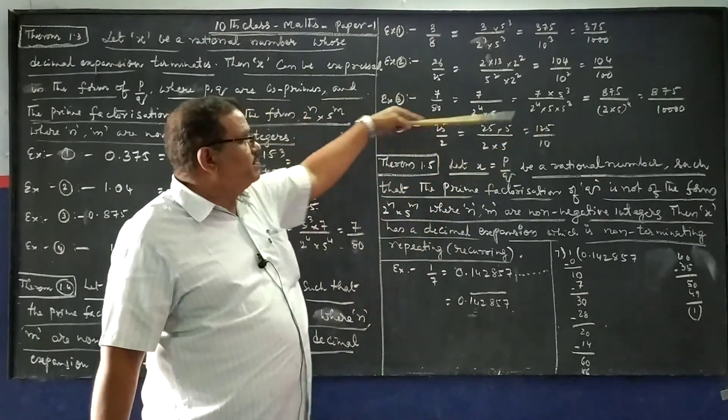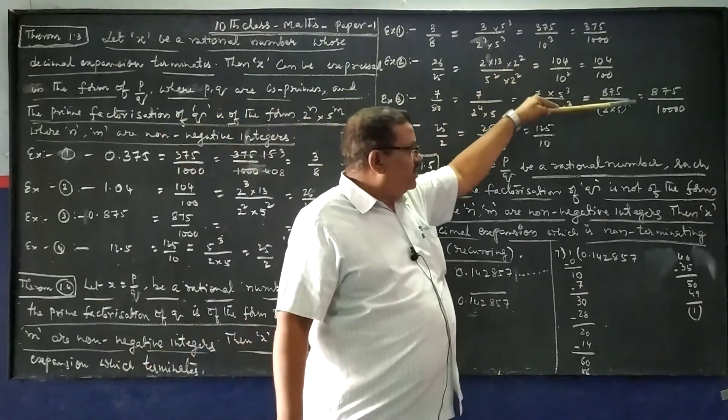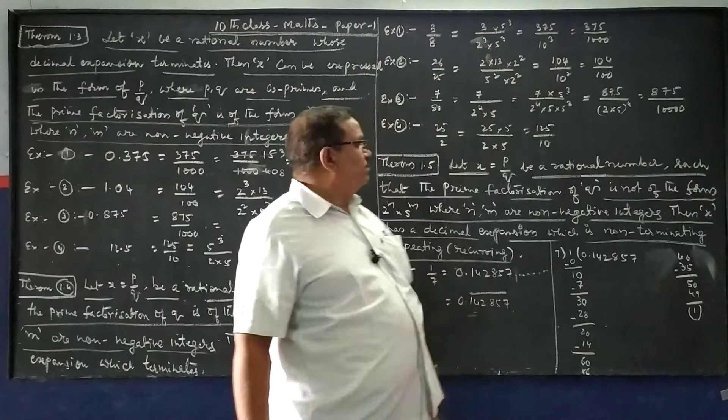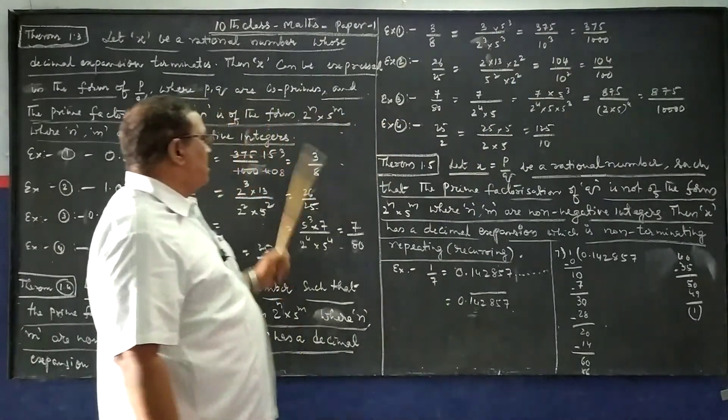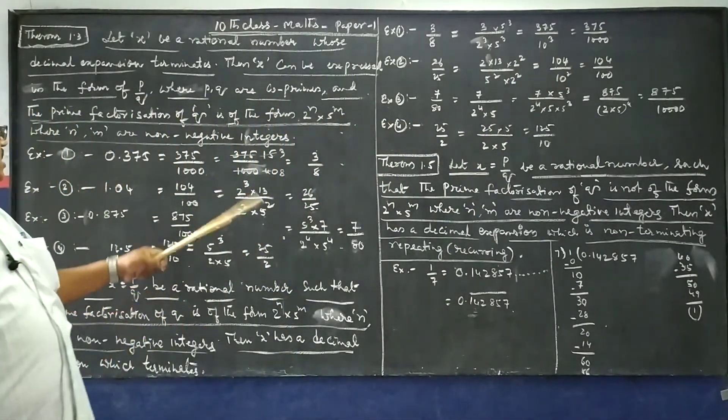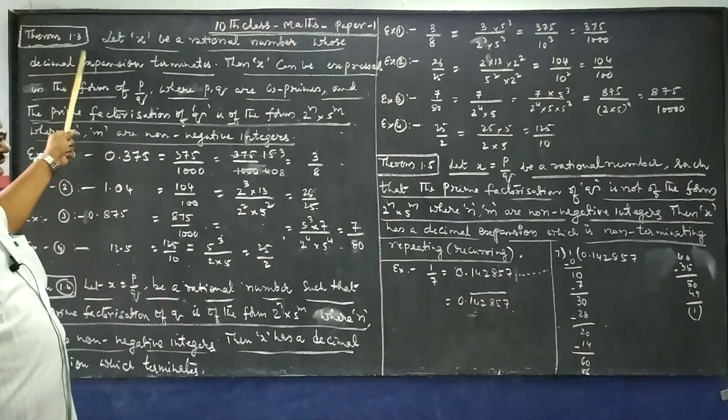Then the decimal expansions are in terminating form. Since theorem 1.4 is quite the converse of 1.3.